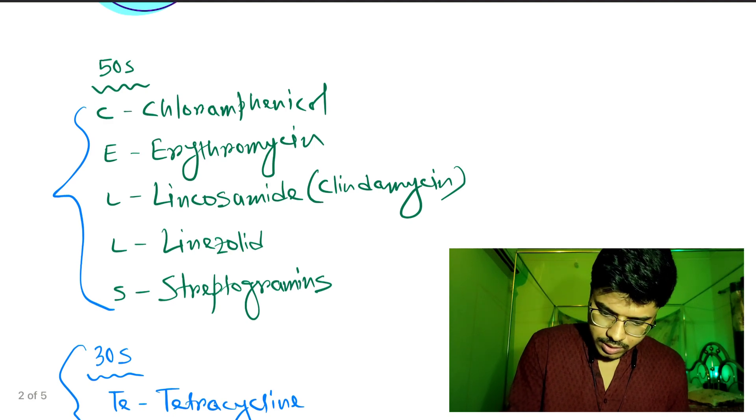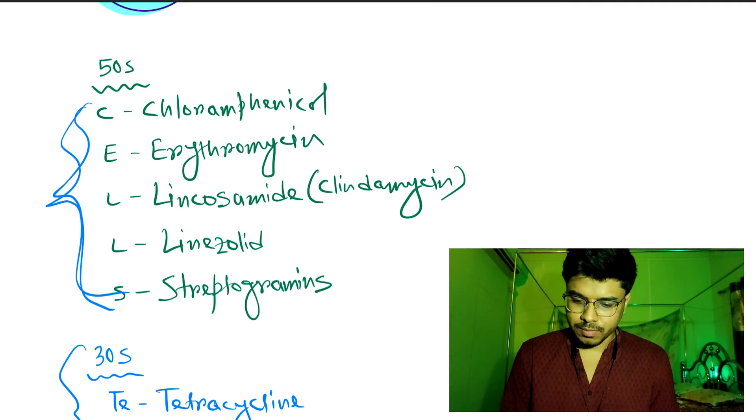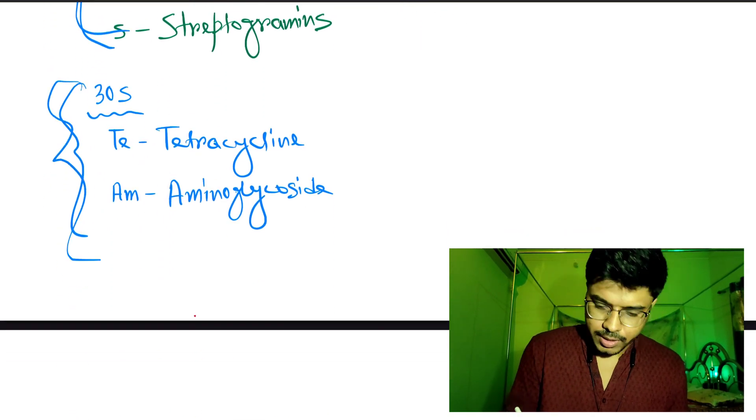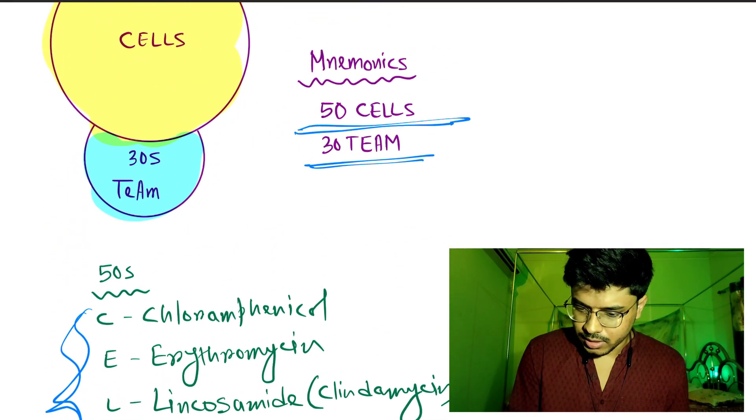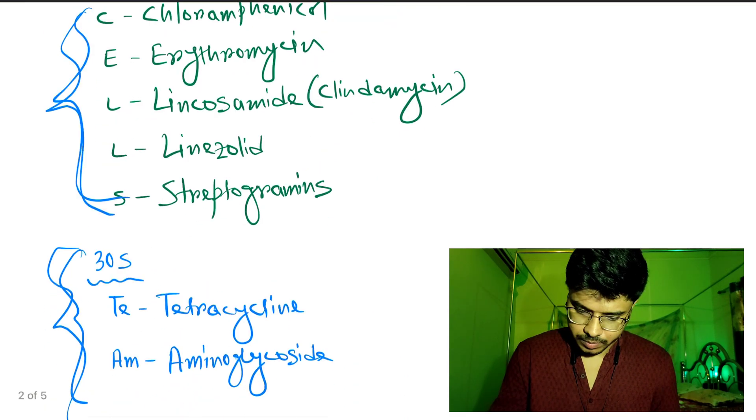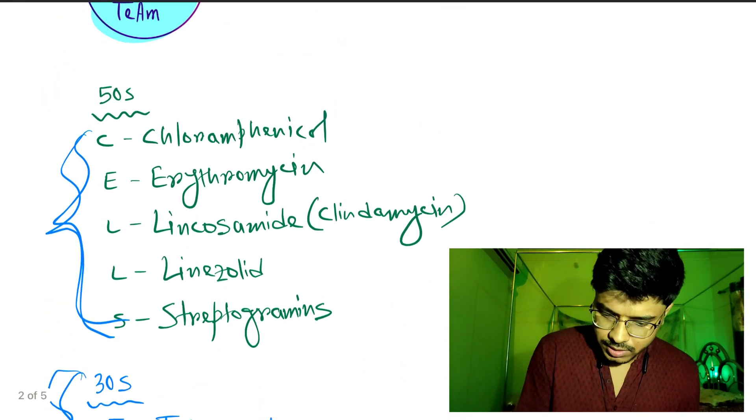So these drugs act by inhibiting 50S part of the ribosome, these drugs act by inhibiting 30S part of the ribosome. Mnemonic is 50 CELLS, 30 TEAM. A quick recap: 50 CELLS.